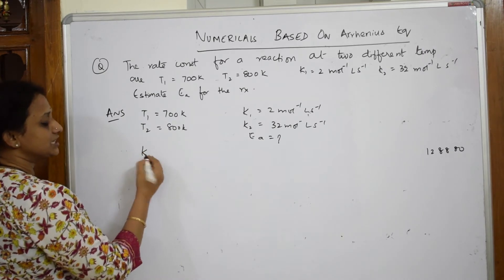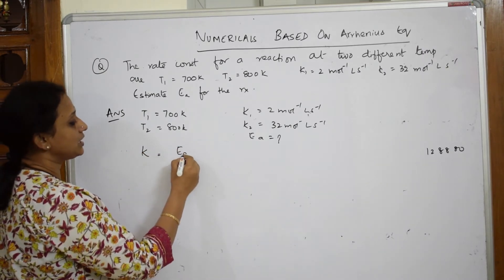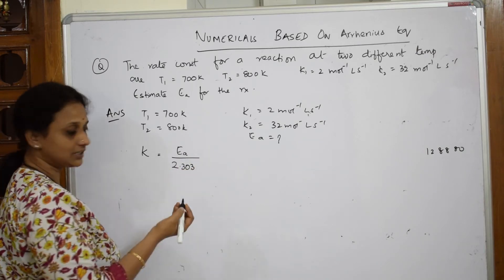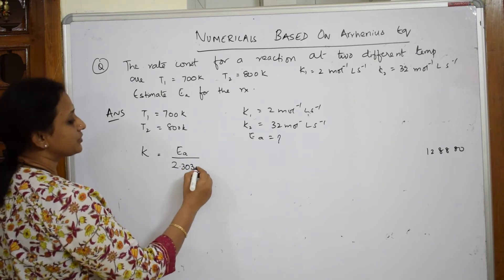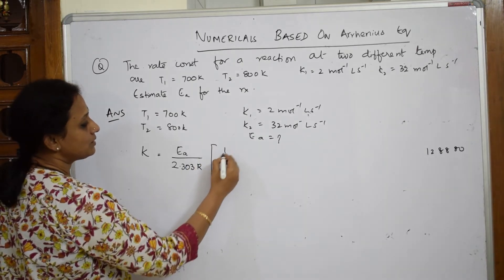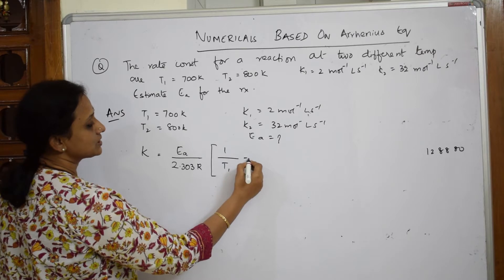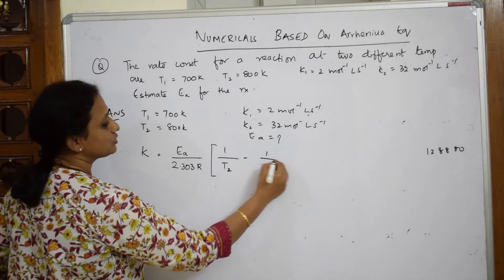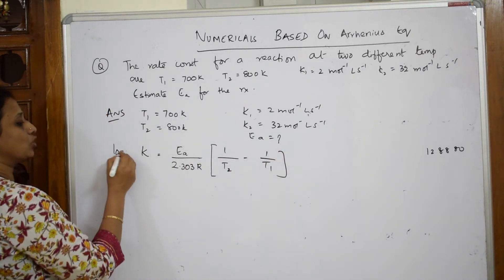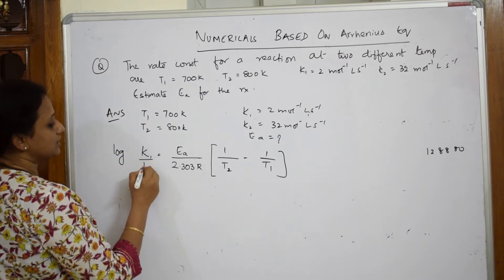The Arrhenius equation as we have already written relates K using Ea by 2.303 R into 1 by T1 minus 1 by T2, which simplifies as T2 by T1. Here we take the log — log K1 by K2.